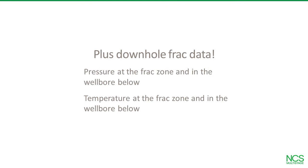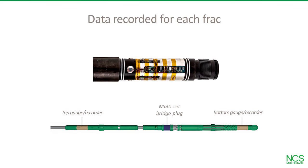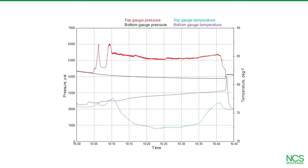Remember that plug-and-perf captures no downhole data? Multi-stage unlimited pinpoint fracturing records pressure and temperature data for each frack. This is our exclusive Trident Precision Gauge Recorder. We run these gauge recorders above and below the isolation bridge plug to measure pressure and temperature at the frack zone and in the wellbore below. This chart shows actual downhole pressure and temperature for a single stage: frack zone pressure measured by the top gauge is red, bottom gauge pressure is black, frack zone temperature is light blue, and bottom gauge temperature is purple.